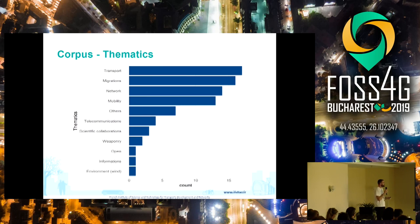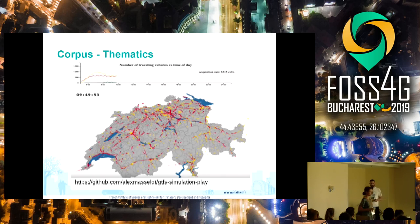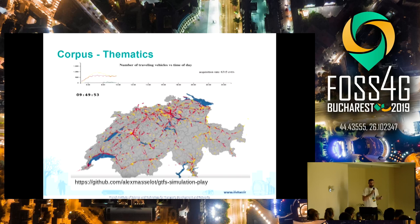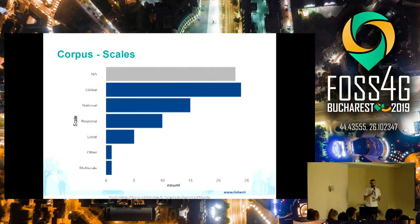The themes used in these applications are mostly transport, migration, networks, and mobility. For example, one application shows a simulation of transport services in Switzerland from a GTFS dataset — bus services and their frequency. Regarding scales, most applications use a global scale; some are national, regional, or local. Very few are multiscale. The Arabesque web application we are developing is multiscale.